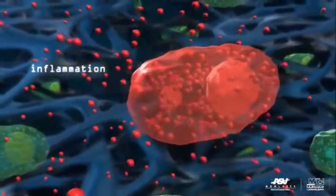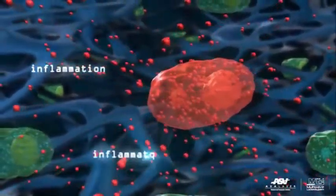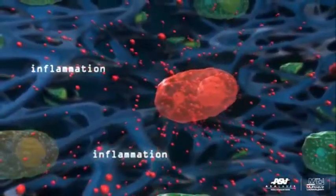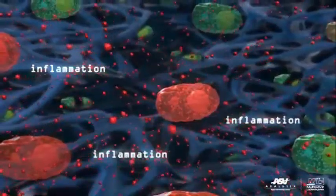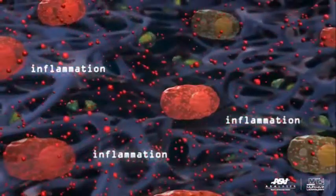When we apply PBM to the target tissue, light is absorbed by the mitochondria, which are responsible for energy production and often referred to as the powerhouses of the cell. They are vital to our survival.